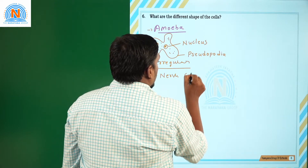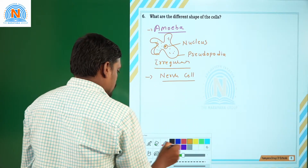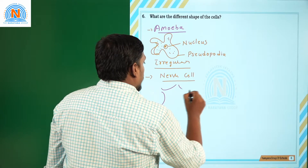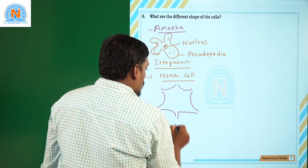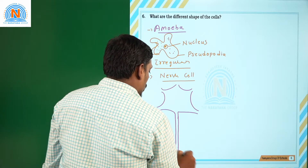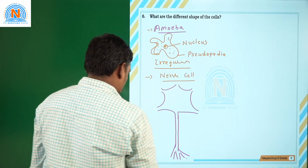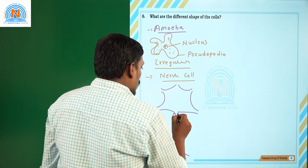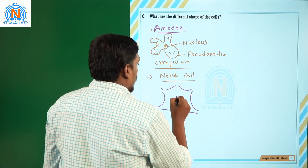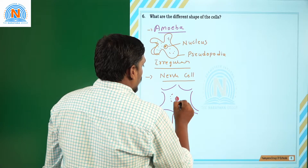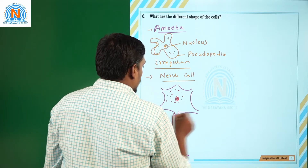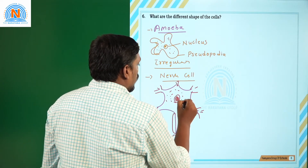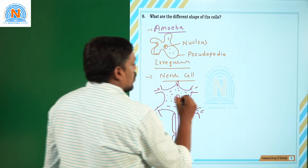Take a nerve cell in the human body — it has a separate shape. It is a long polar structure. The nerve cell structure is very important because it continues to be studied up to higher grades like 10th grade.